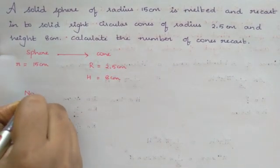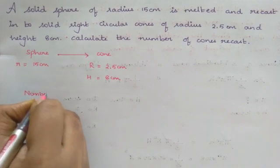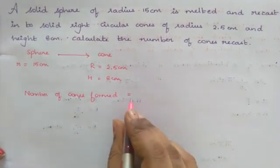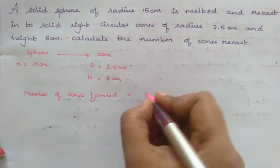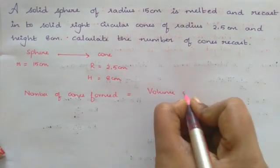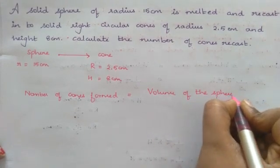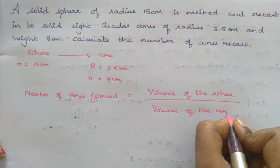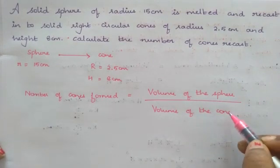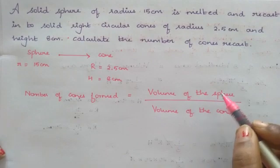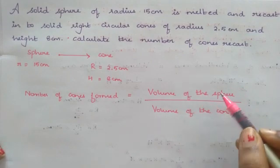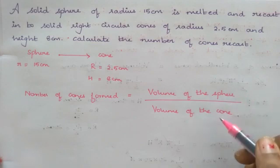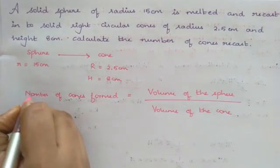We are asked to identify the number of cones formed. This will be equal to what is converted to what? A sphere is converted to a cone. The numerator is always for the original 3D image. What is the original image? Sphere. So its volume divided by the volume of each of the cone. If we do it so, we will be able to identify how many cones are being formed.